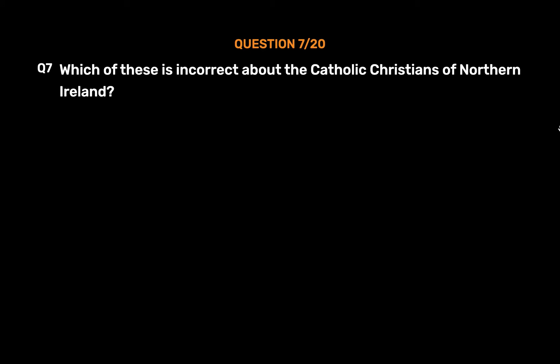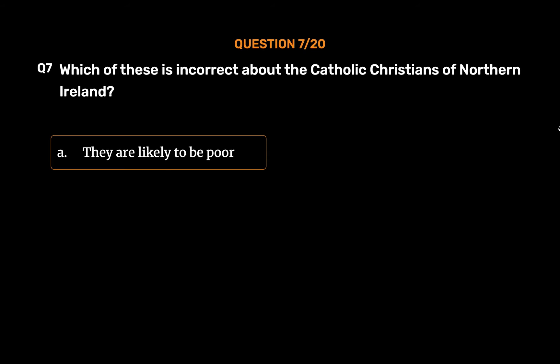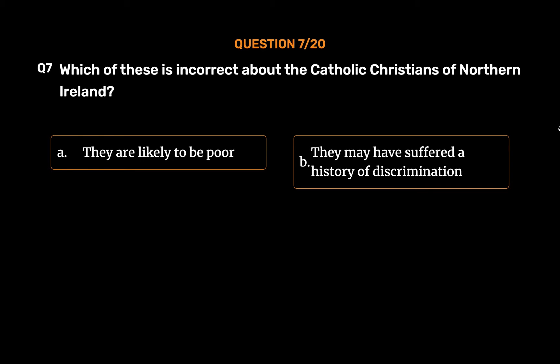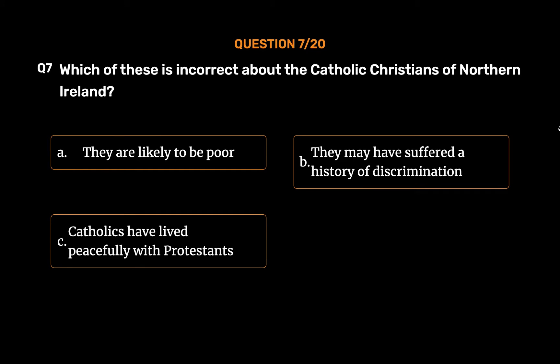Question number 7. Which of these is incorrect about the Catholic Christians of Northern Ireland? Option A: They are likely to be poor. Option B: They may have suffered a history of discrimination. Option C: Catholics have lived peacefully with Protestants. Option D: All of them.